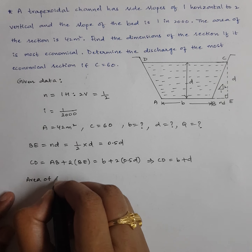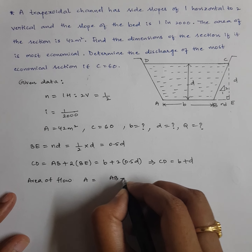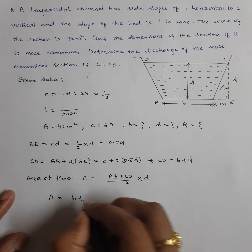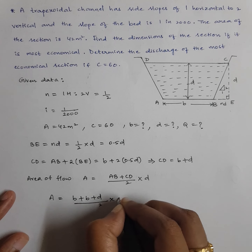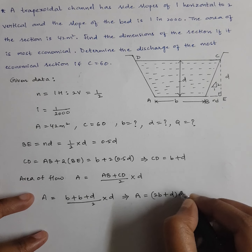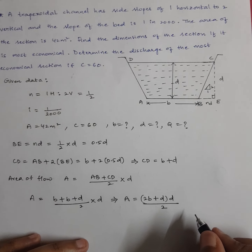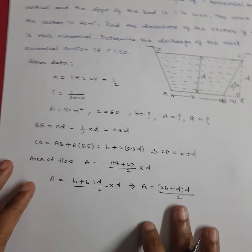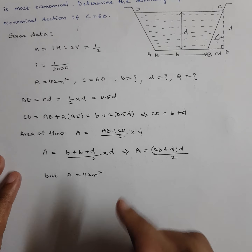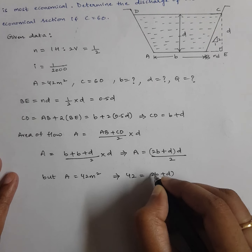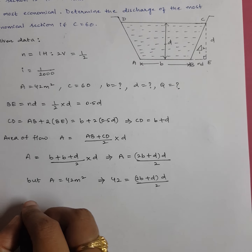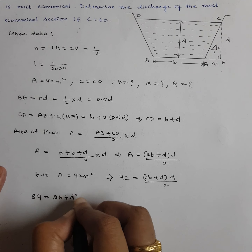Area A equals (B + CD)/2 into D equals (B + B + D)/2 into D equals (2B + D)·D/2. Since area is given as 42 m²: 42 equals (2B + D)·D/2, which gives 84 equals (2B + D)·D. Take this as equation number 1.